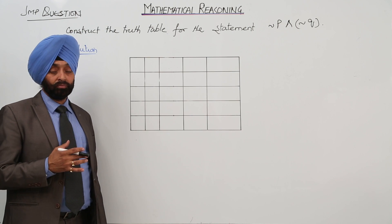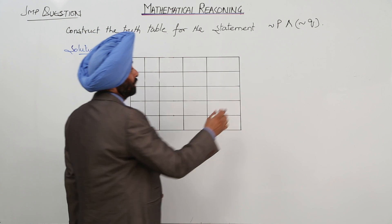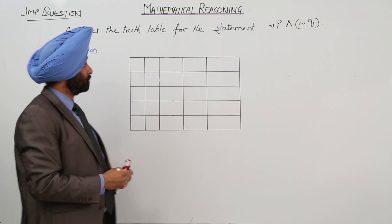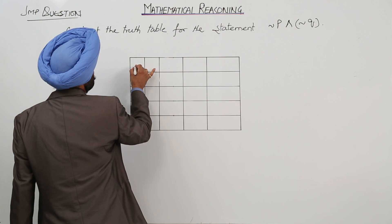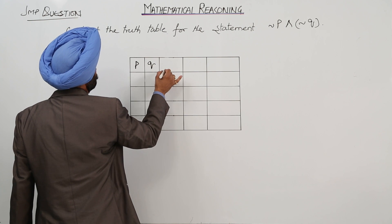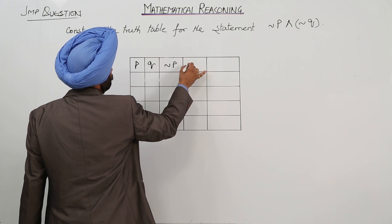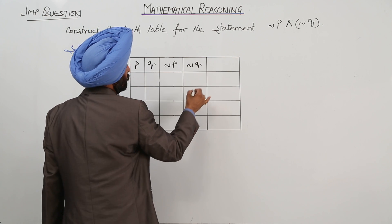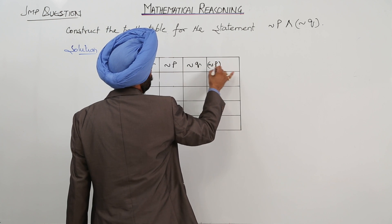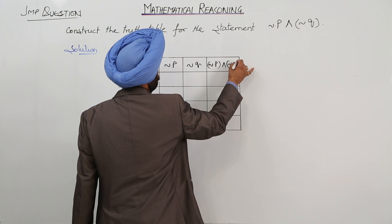Let's construct the truth table for negation of P and negation of Q. We are having negation of P, negation of Q, and then negation of P and negation of Q.